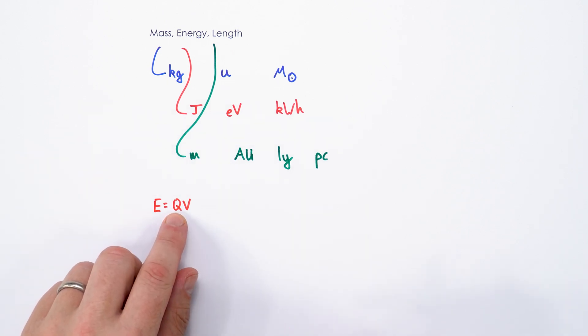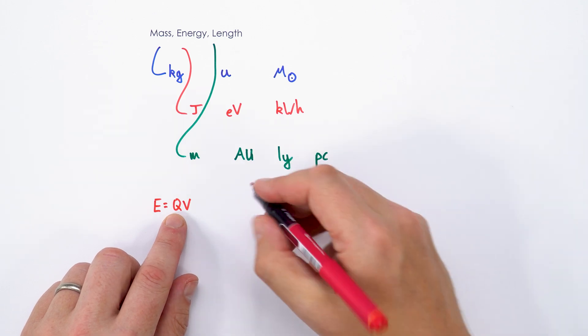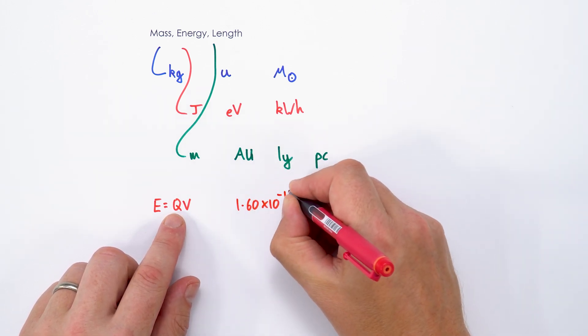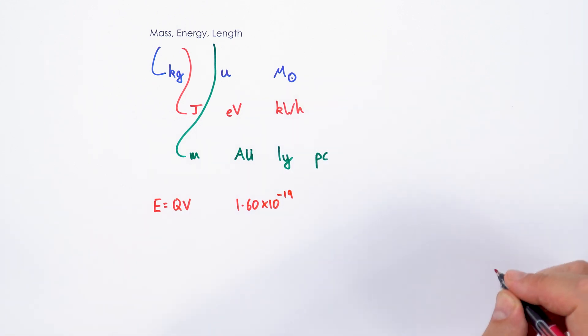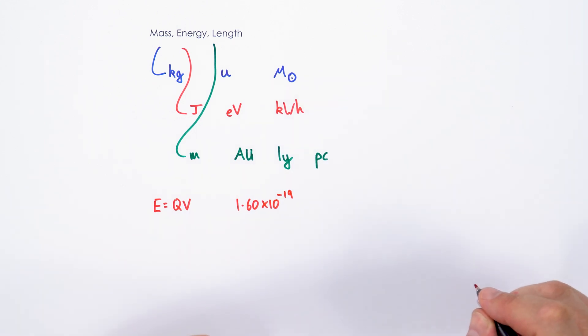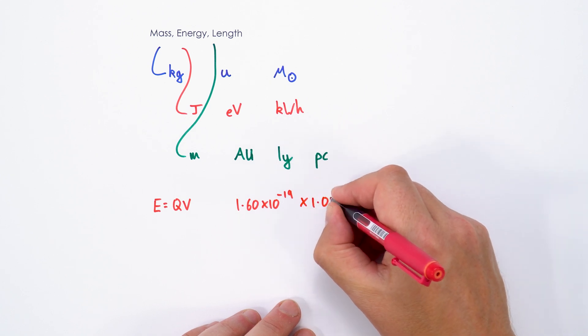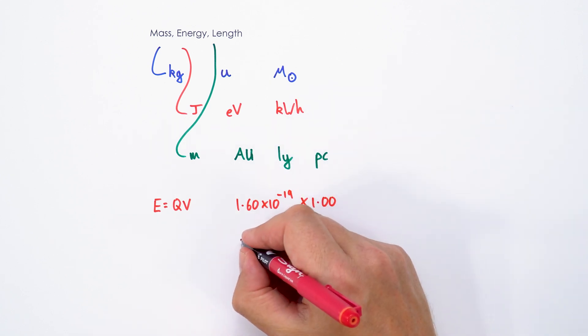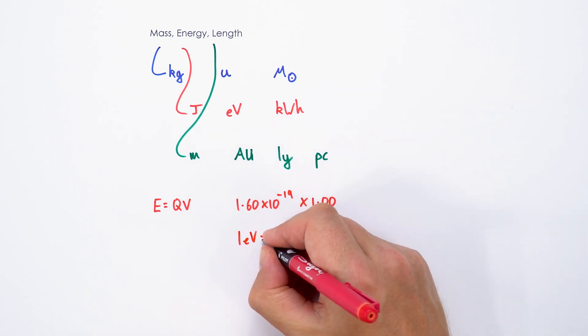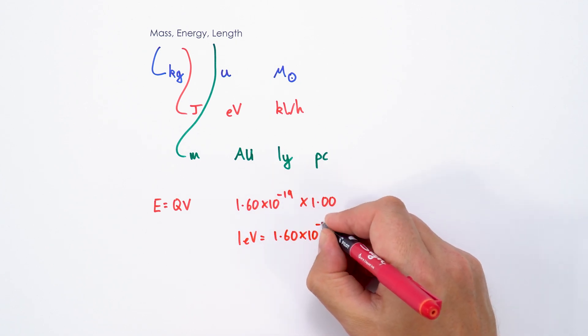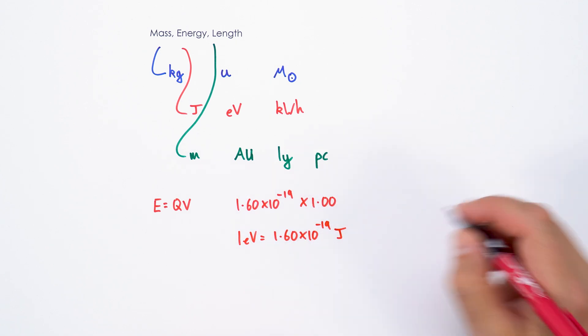The charge on an individual electron is equal to 1.60 times 10 to the minus 19 coulombs. If we accelerated one electron by one volt, we'd multiply this by the accelerating PD of 1.00, which means that one electron volt is the equivalent to 1.60 times 10 to the minus 19 joules, an incredibly small number.